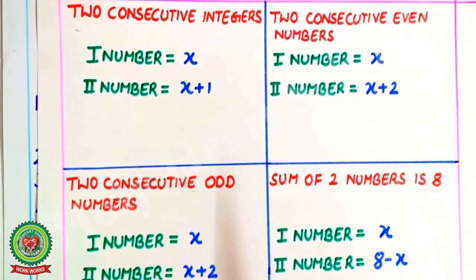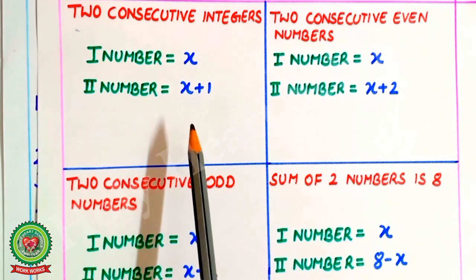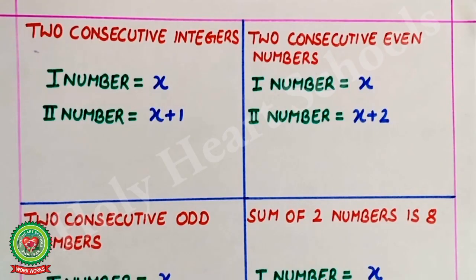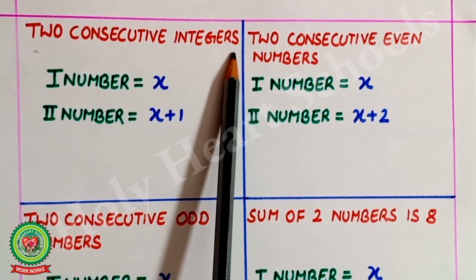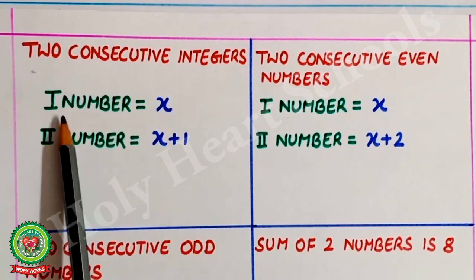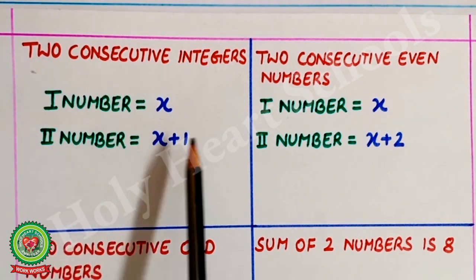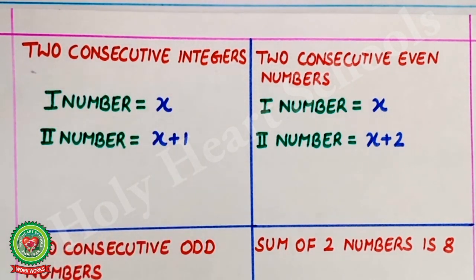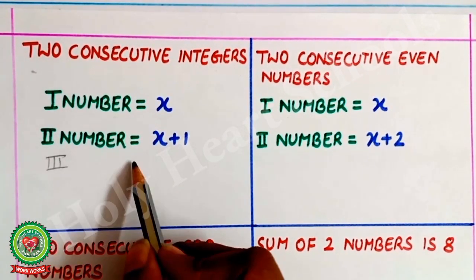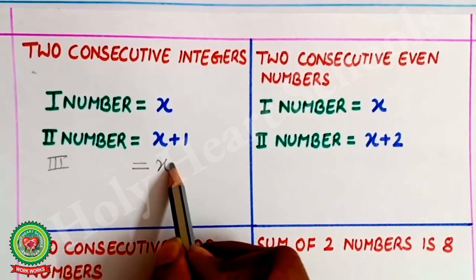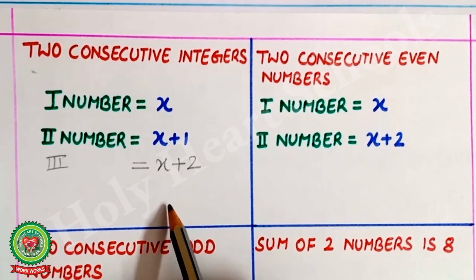First of all, in word problems we need to know how to let numbers. For two consecutive integers, the first number is x and the second number is x plus 1. If a third number is also needed, that number is x plus 2. Similarly, the next numbers are x plus 3, x plus 4, and so on.